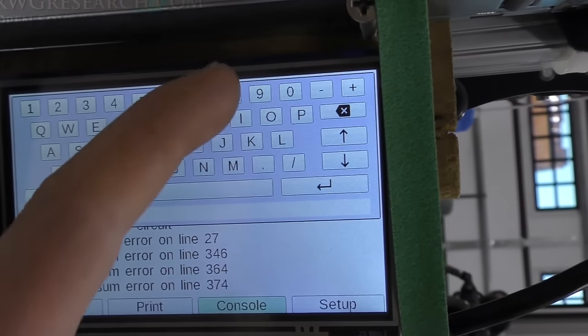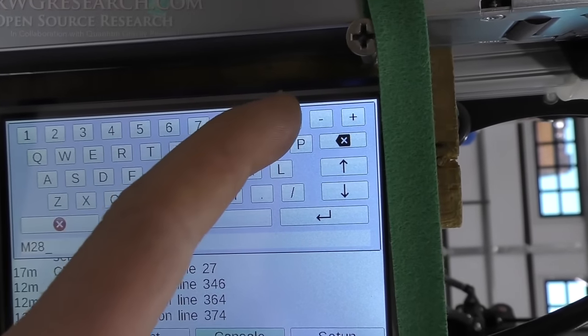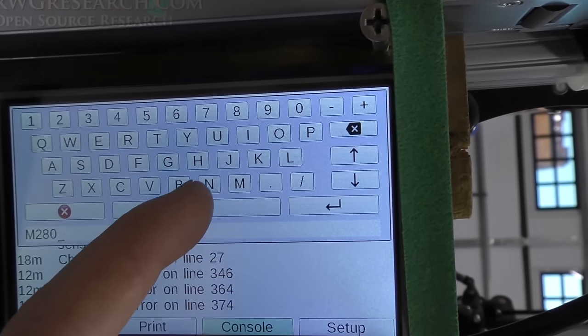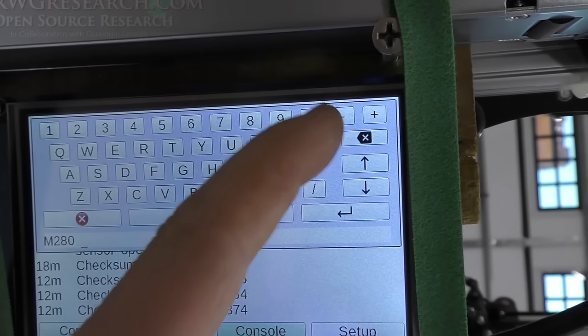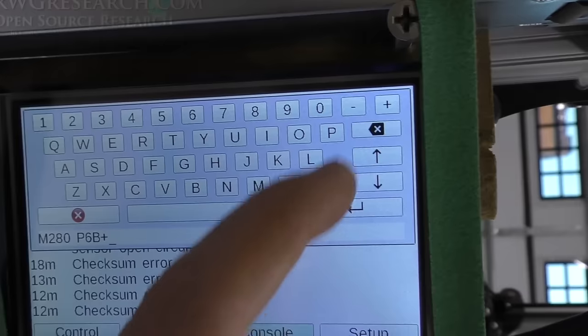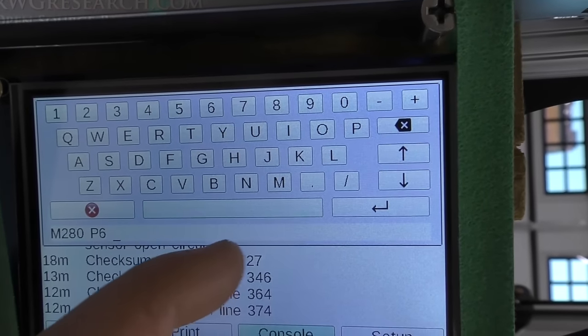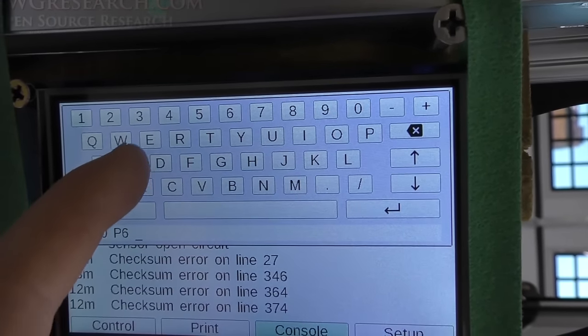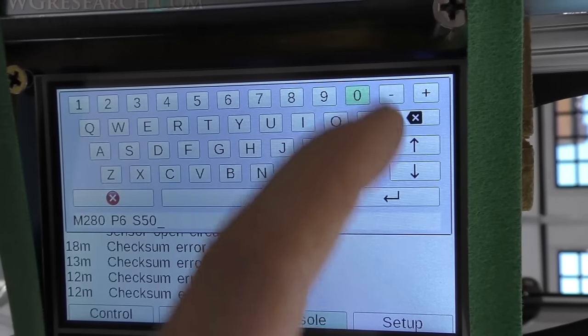So M280, and then a P6, which is the heater channel, and then S50 is the lowest speed.